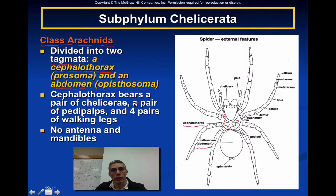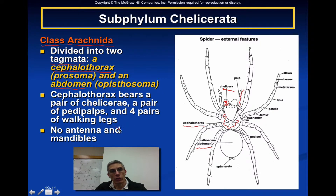The cephalothorax is going to bear a pair of chelicerae, visible on the most anterior part of the animal. You're going to see a pair of pedipalps, and most of these animals will have four pairs of walking legs. When you talk about arachnids, you're not talking about animals that have antennae, and these animals do not have mandibles.